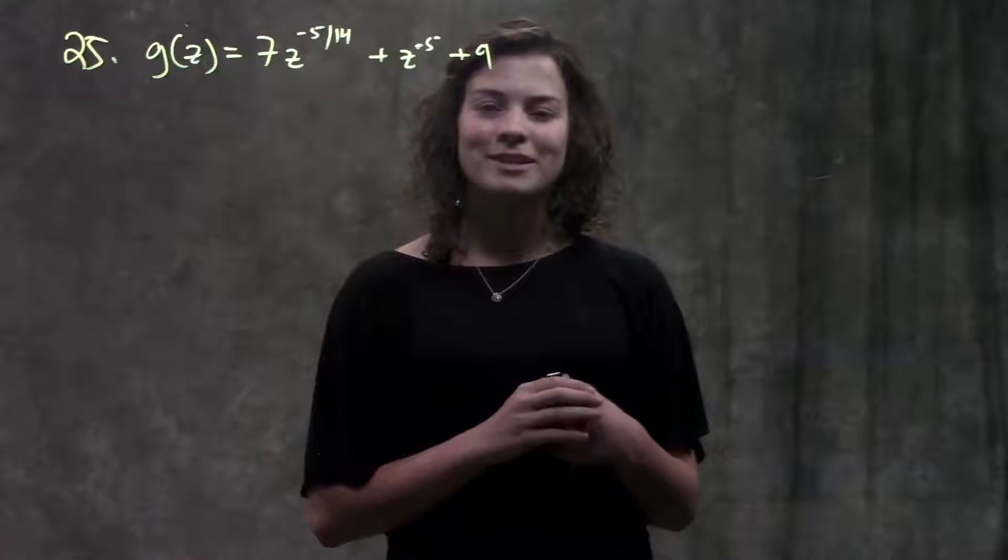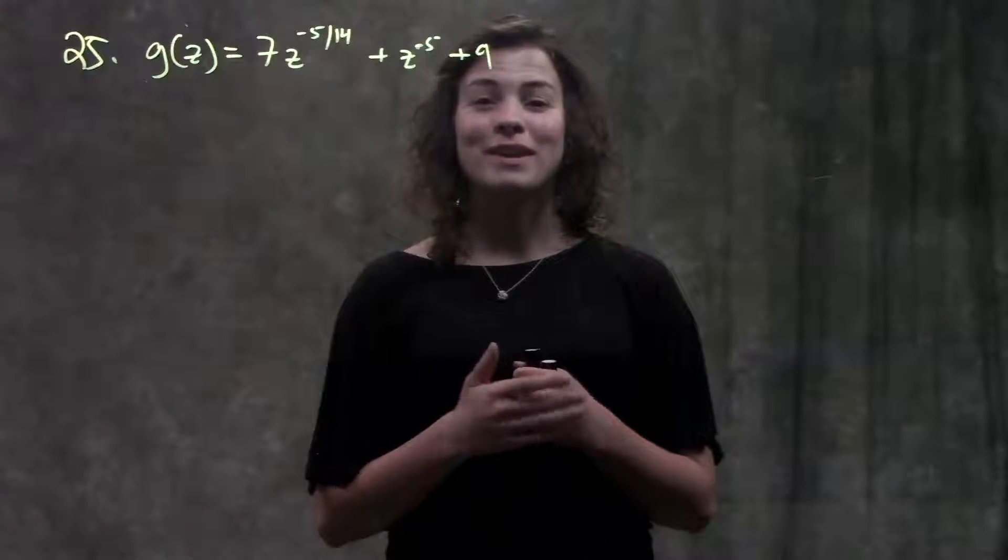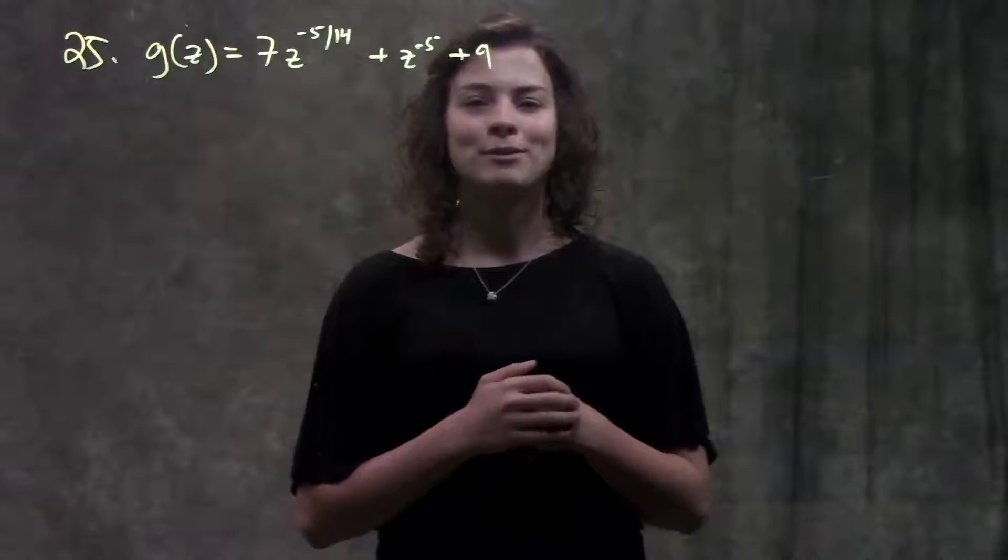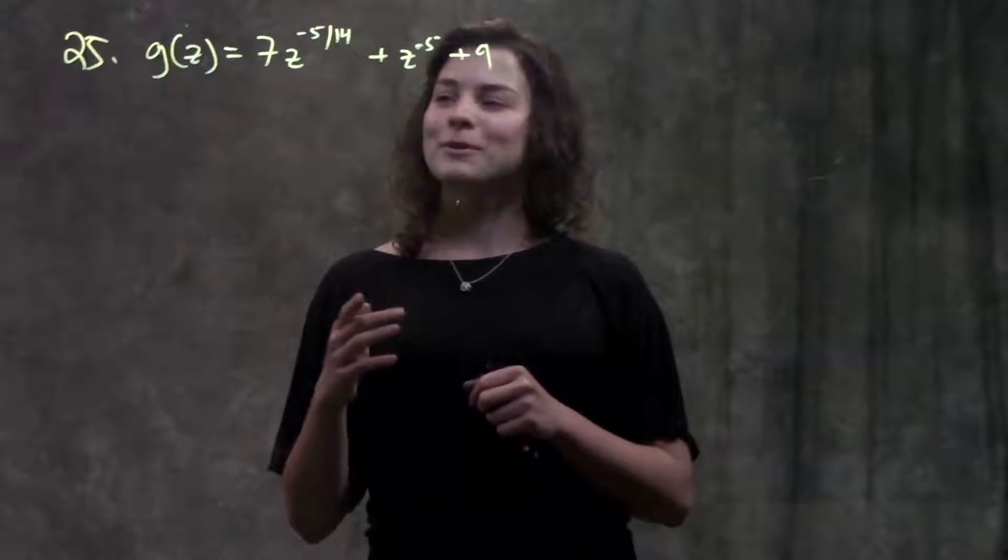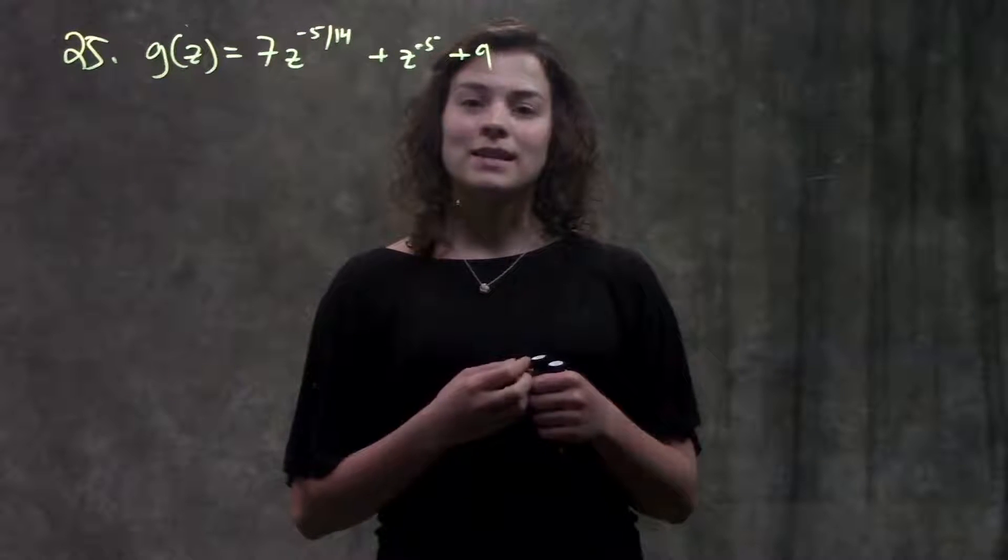Solving the derivatives using the limit definition took a really long time. No one liked doing them that way. So now we're learning more of the calculus way of how to solve derivatives directly. Alright, so this is number 25 in your book. It gives us this function, g of z, and it's asking us to find the derivative.